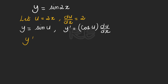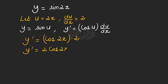Now y prime will be, when we substitute, cosine u which is 2x — so cosine 2x — times du/dx which is 2. Therefore y prime is 2 cosine 2x, and we're done.